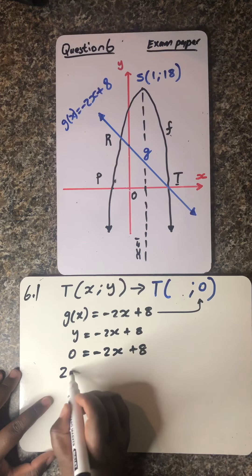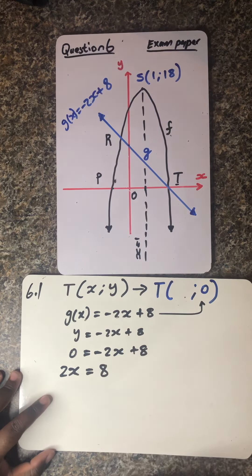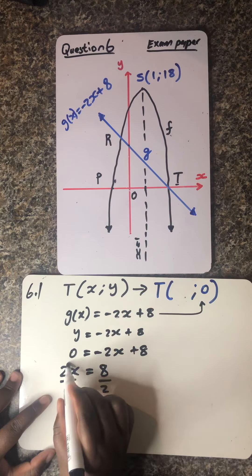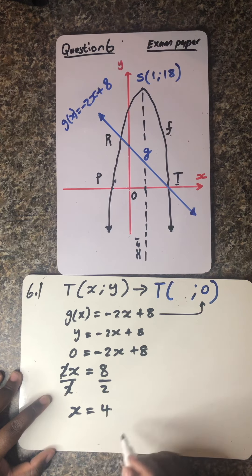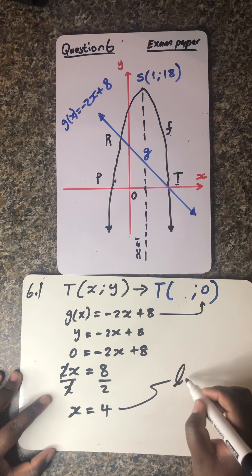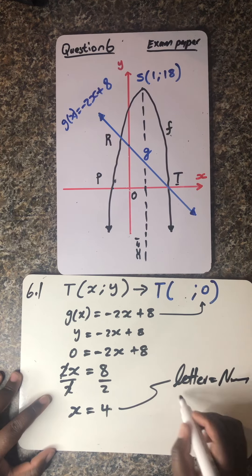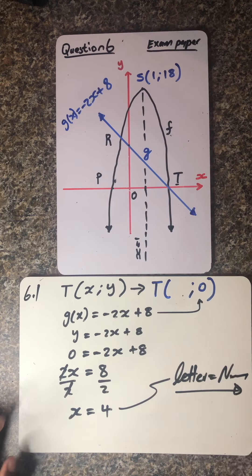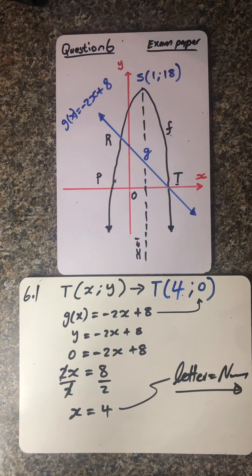By so saying ladies and gentlemen, you won't be surprised when I write 2x which is equals to 8. Obviously you just divide by 2 so that it cancels, and then you remain with x which is equals to 4, which means you've got your final answer in the form of letter equals number. That means our x value is equals to 4.